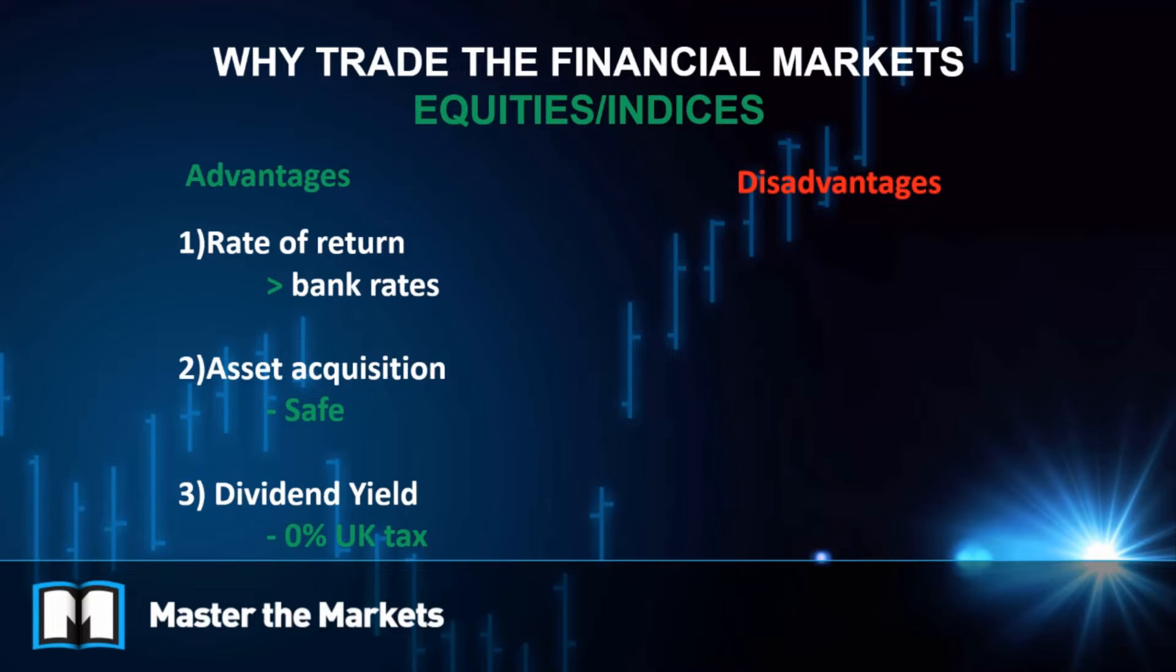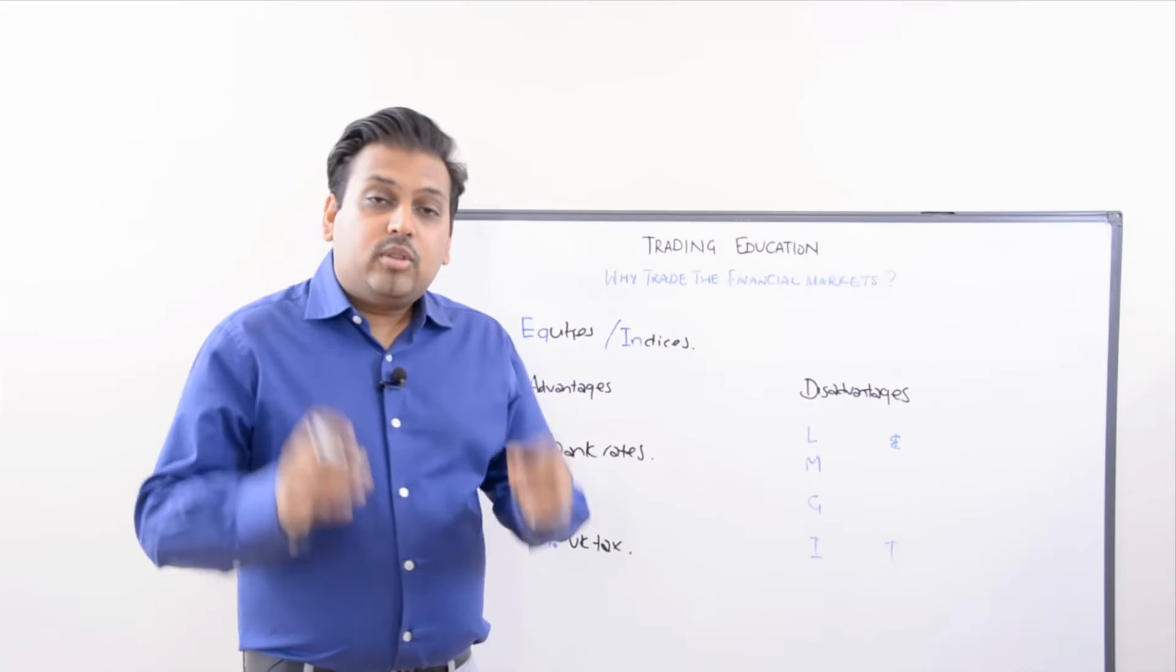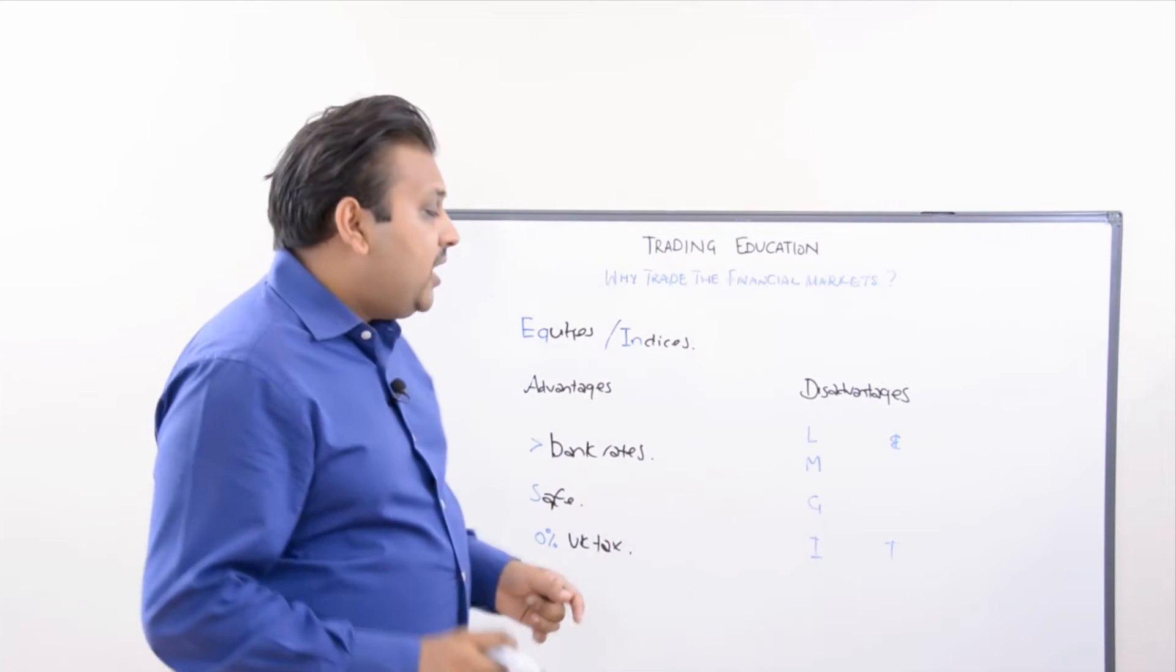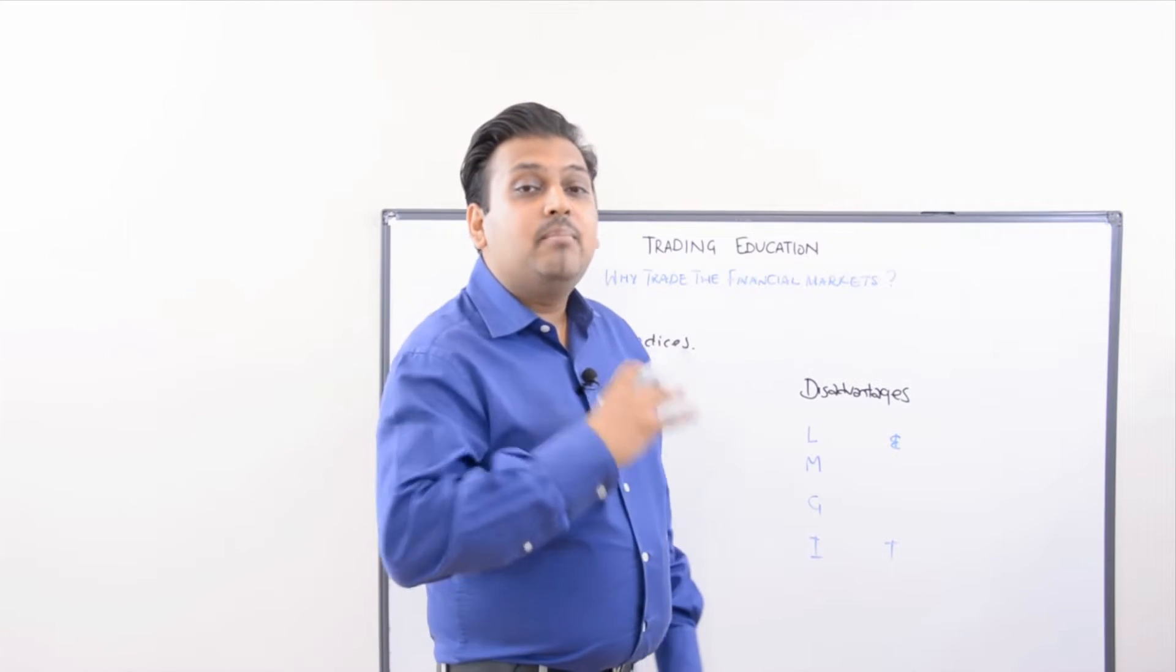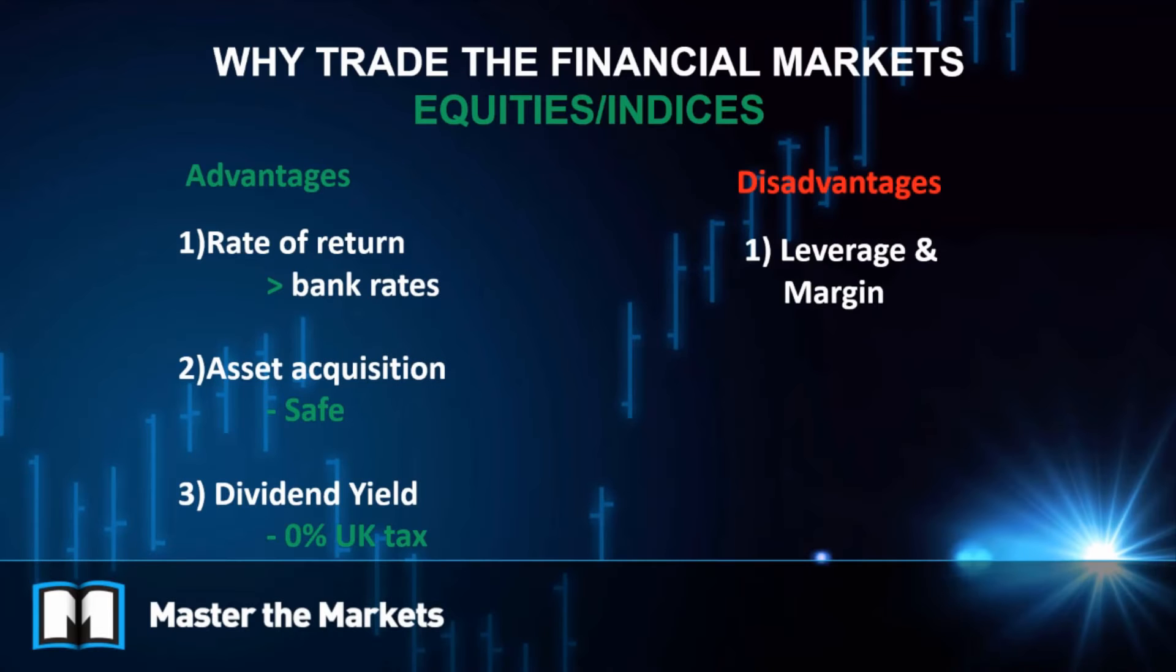So what are the disadvantages then of trading with equities and indices? The first disadvantage that I can think of immediately is leverage and margin. These are leverage and margin products. You need to have enough margin of course to buy stocks.